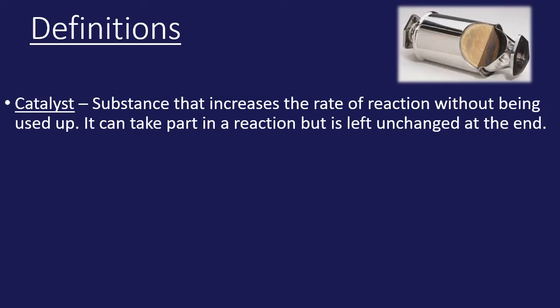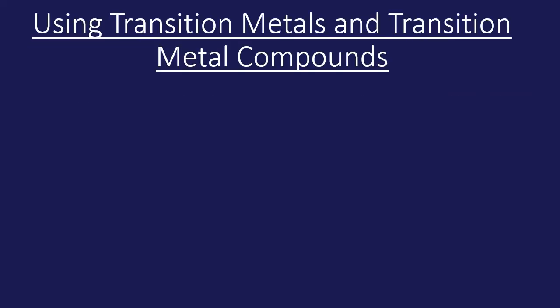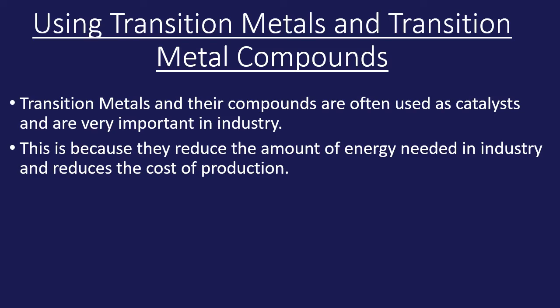Sometimes a catalyst is used in the reaction, but it would be then regenerated at the end and therefore left unchanged. The activation energy is the minimum amount of energy required between colliding particles in order for a successful collision to take place. Transition metals and their compounds are often used as catalysts, and that's very important in industry because it allows the reaction to take place at low temperatures, which means less energy is required, which in turn reduces the cost of production.